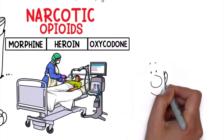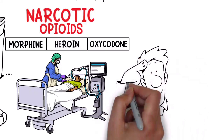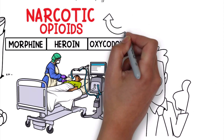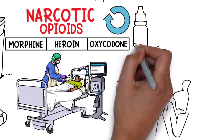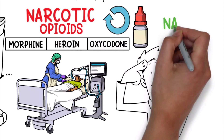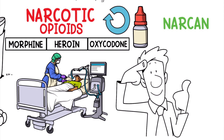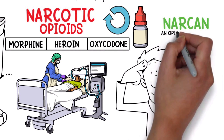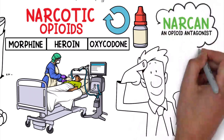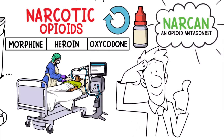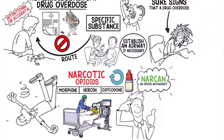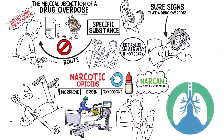Here's an important tidbit to remember: you can reverse a narcotic overdose with the drug Narcan, which is an opioid antagonist. We'll be diving deeper into this topic in separate videos here on our channel.